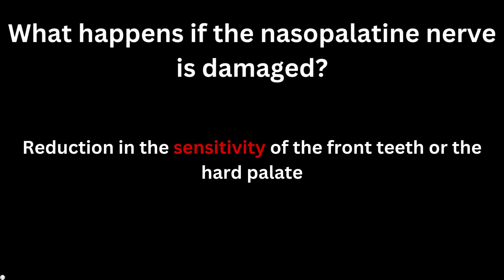Before removal we must inform our patients about possible complications. During the removal of the nasopalatine duct cyst, we might inadvertently damage the nasopalatine nerve, which is seen in many patients. We might also damage an artery in that area, causing profuse bleeding. If the nasopalatine nerve is damaged, there will be a reduction in sensitivity of the front teeth or the hard palate, since it supplies the upper anterior teeth and the anterior hard palate area.